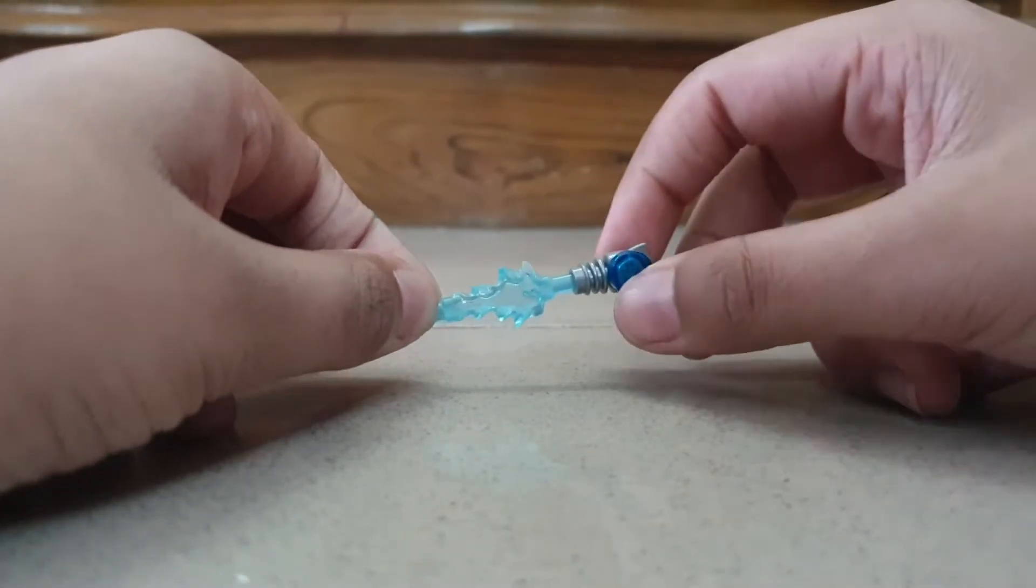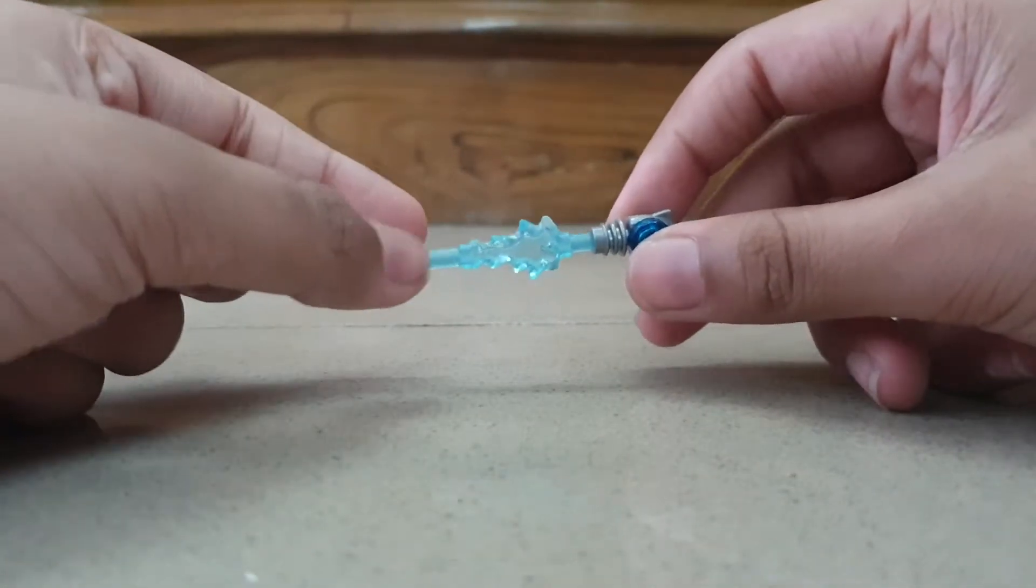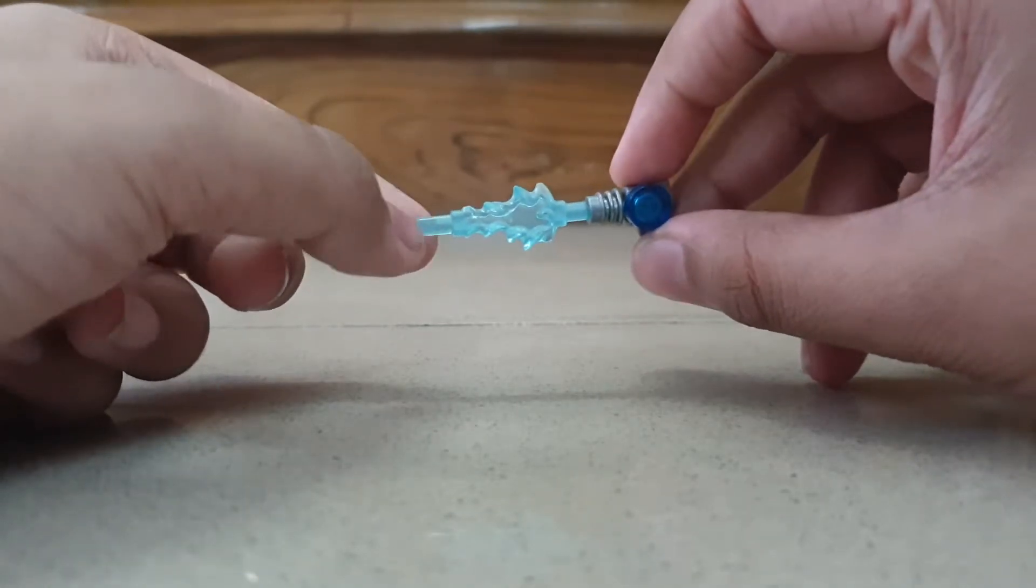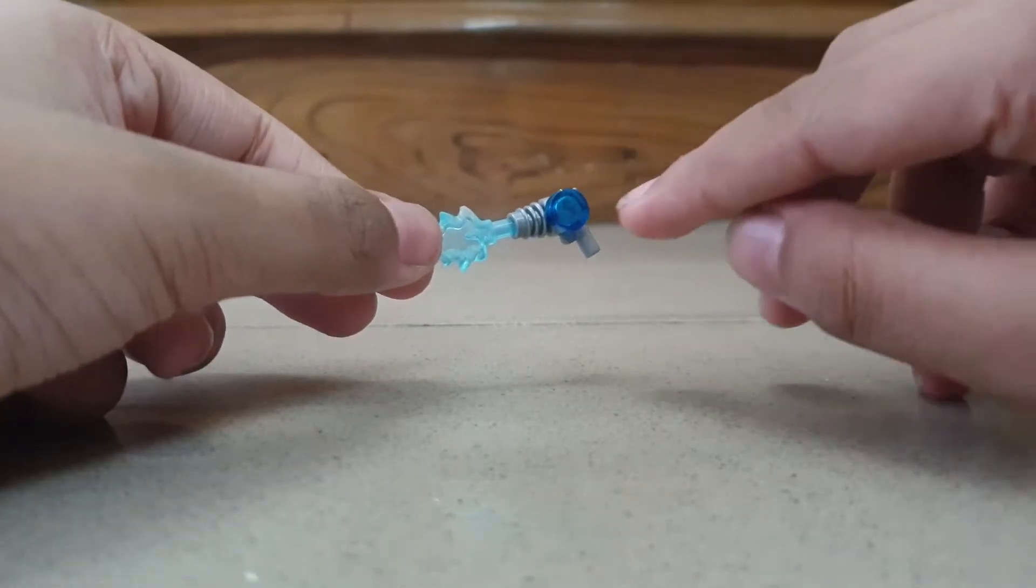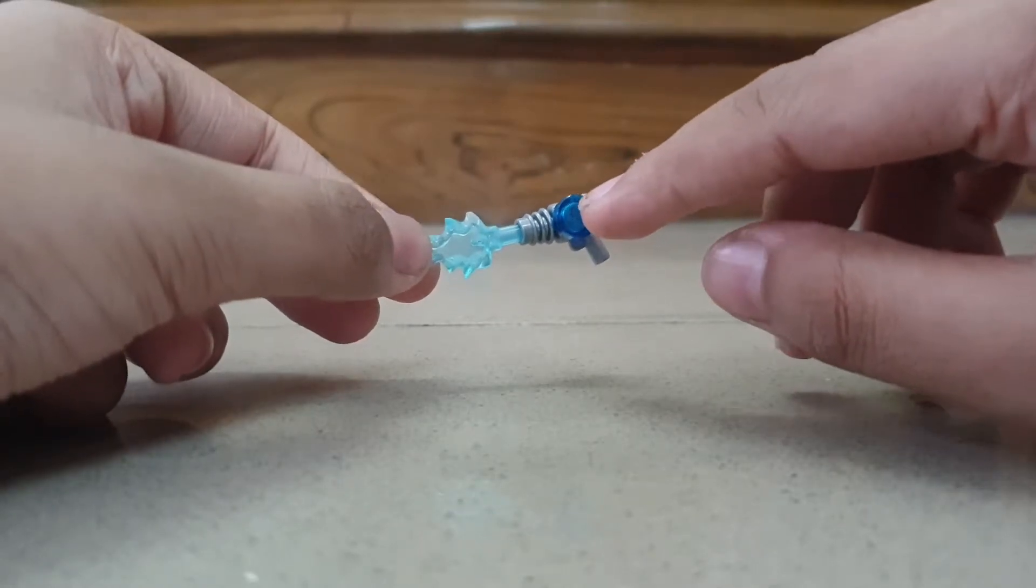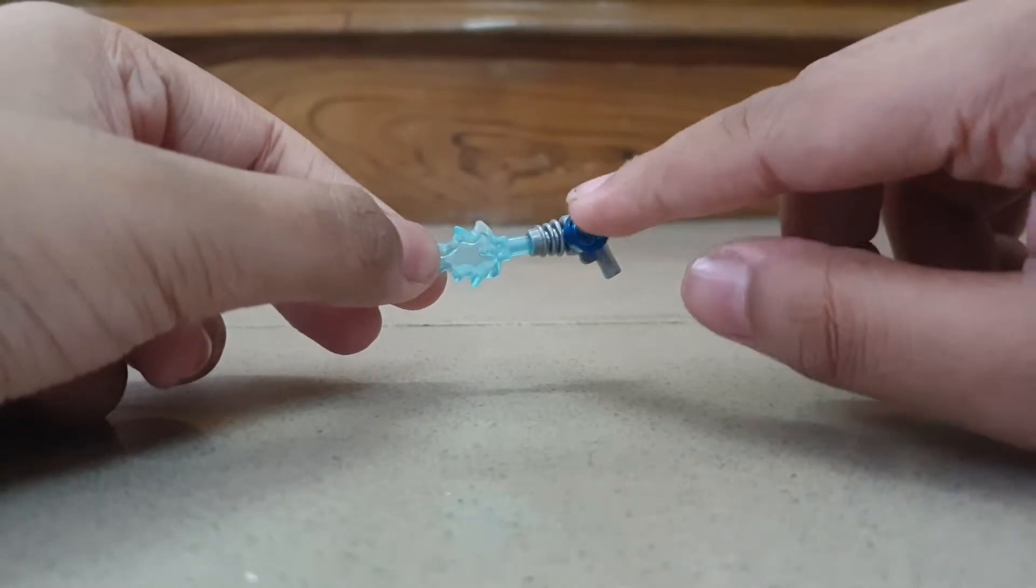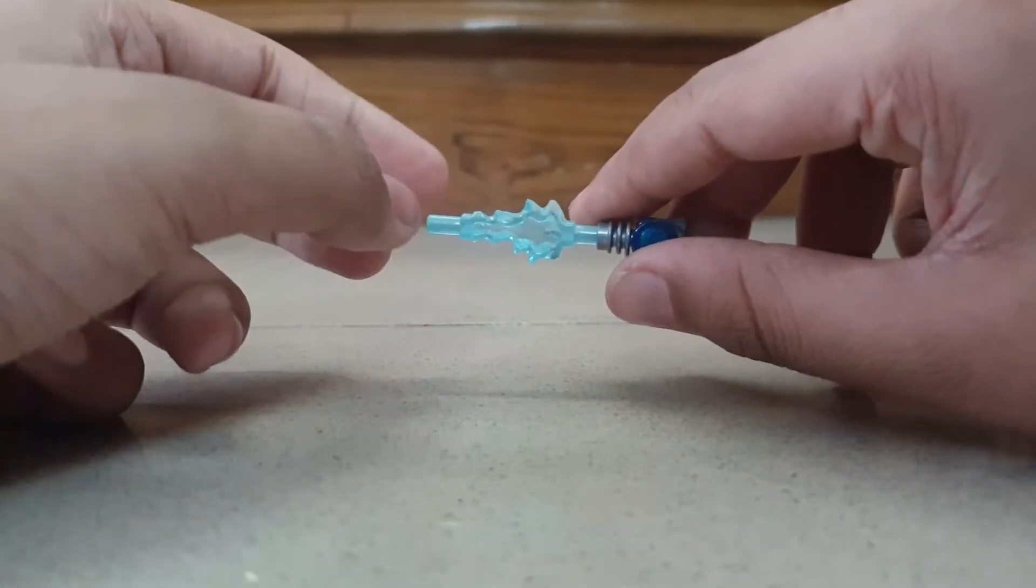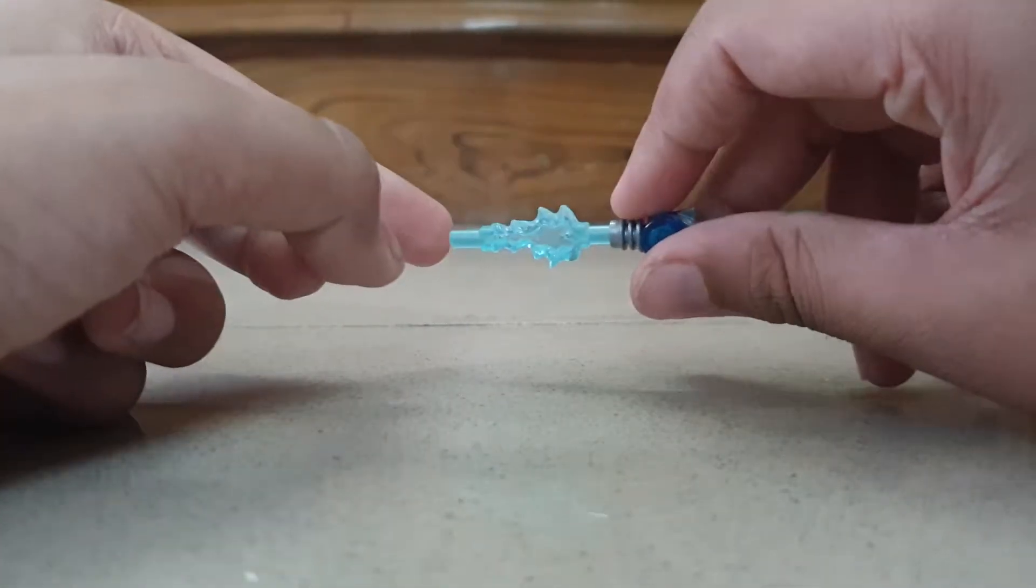What's up Skywalkers, it's me Brick Skywalker. Today I have Agent K's blaster from Men in Black 3. Agent K's blaster has some blue translucent stuff, and this is the thing that shoots.